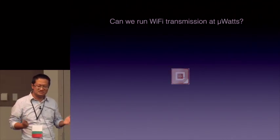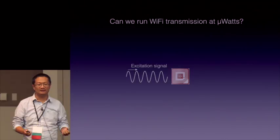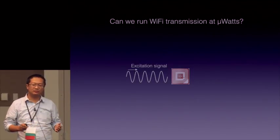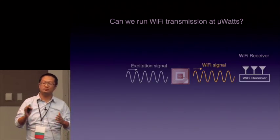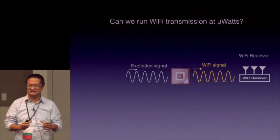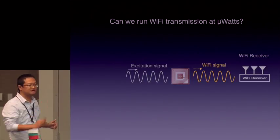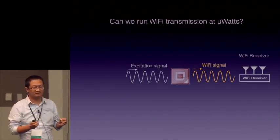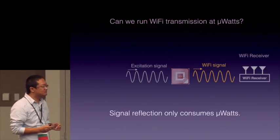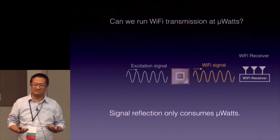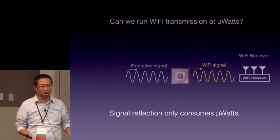What we do is put this antenna into a small device called a backscatter tag. Backscatter tags work by taking an incoming excitation signal. This backscatter tag is able to convert and reflect the excitation signal to a Wi-Fi receiver. During reflection, the tag converts the incoming signal into a Wi-Fi signal. As a result, the Wi-Fi receiver will observe the reflected backscatter Wi-Fi signal. Because signal reflection only consumes microwatts of power, if we can build a system that enables this vision, then we can do Wi-Fi transmission with microwatt power consumption.